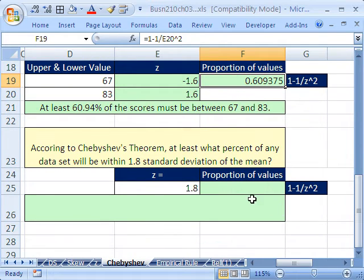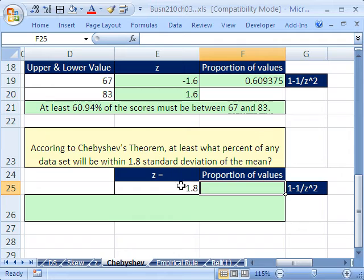Now, one final application. You could just make a general statement. According to Chebyshev's theorem, at least what percent of any data set will be within 1.8 standard deviations of the mean? We just already have our z-score here.